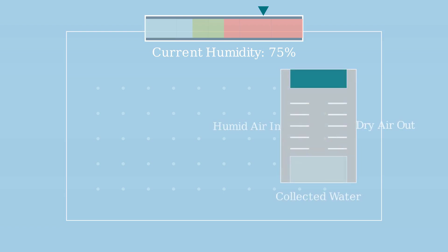A dehumidifier solves this problem by drawing in humid air, extracting the moisture, and releasing drier air back into the room. As air passes through the dehumidifier, moisture condenses and is collected, while the now drier air is recirculated. The goal of a dehumidifier is to maintain optimal humidity levels, typically between 30 and 50%.